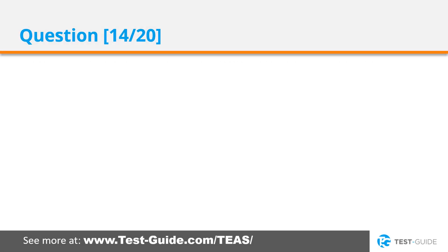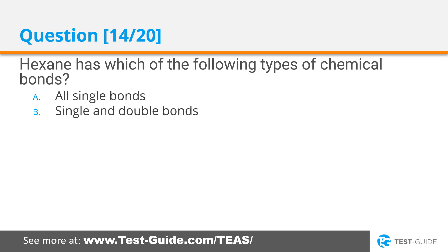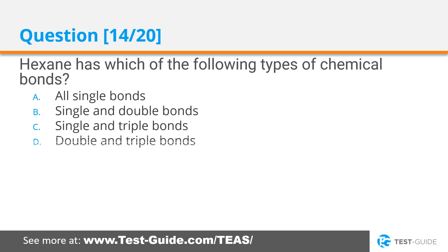Question 14. Hexane has which of the following types of chemical bonds? All single bonds, single and double bonds, single and triple bonds, double and triple bonds.